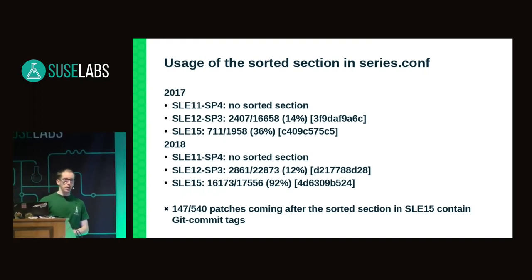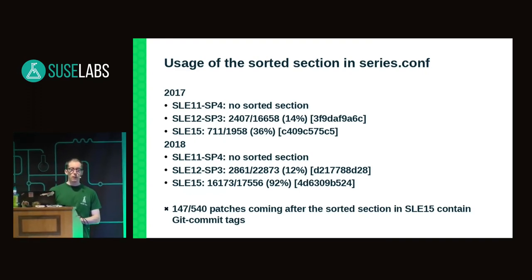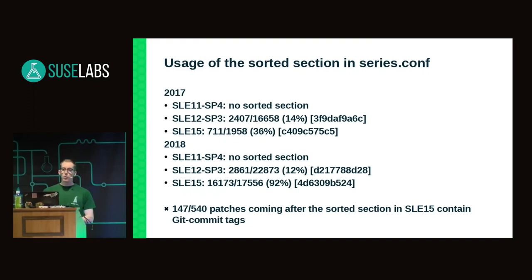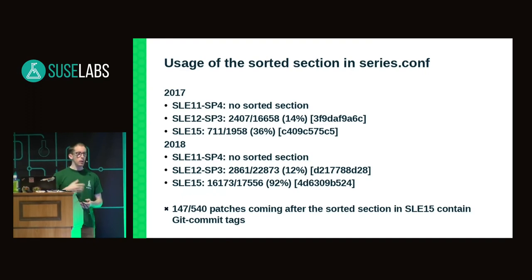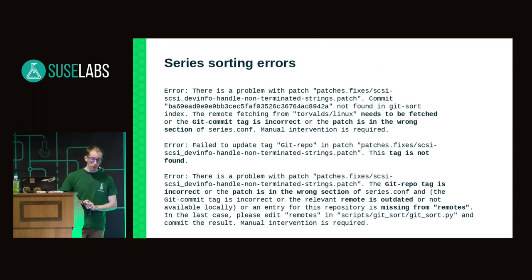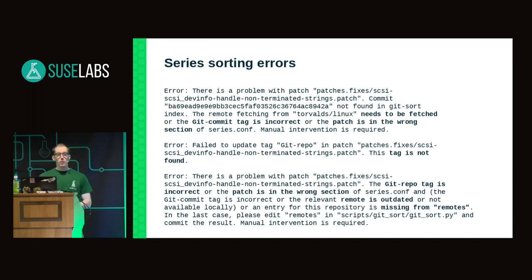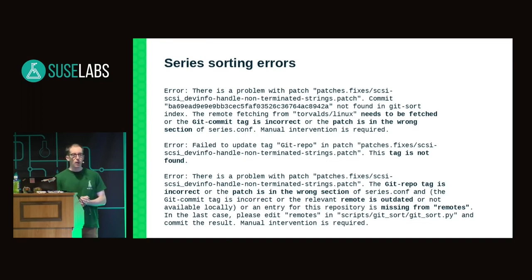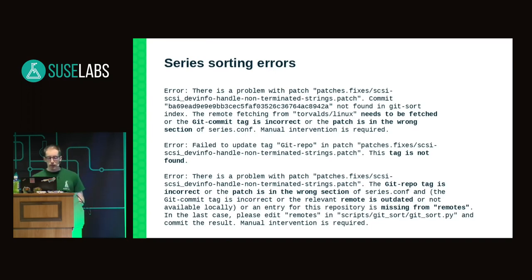As the usage of the sorted section increased, users started to encounter errors from the sorting scripts. Users would check out a pristine copy of the SLE15 branch, try to run series-sort, and be faced with errors. What would happen is that someone would commit a broken version of series.conf to SLE15, breaking it for every other user who checked it out afterward. This is essentially the same problem as someone committing code that doesn't build — the solution is validation.